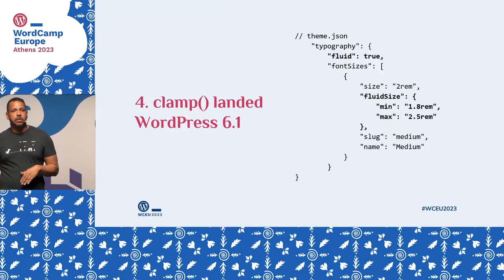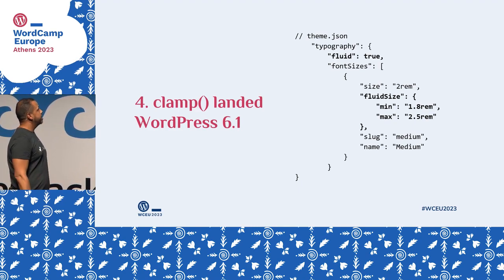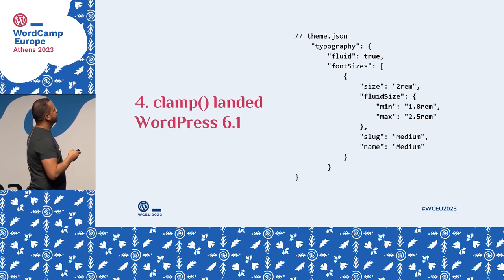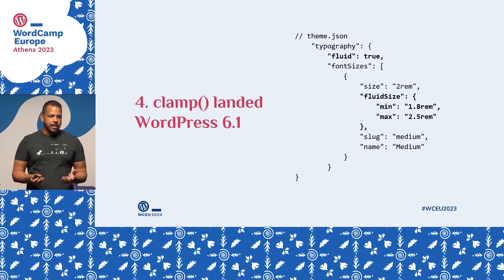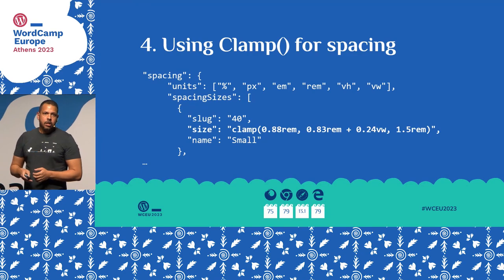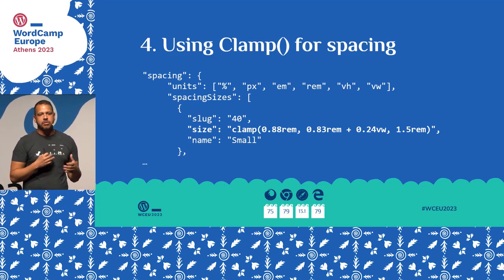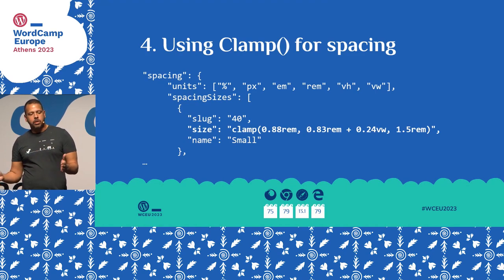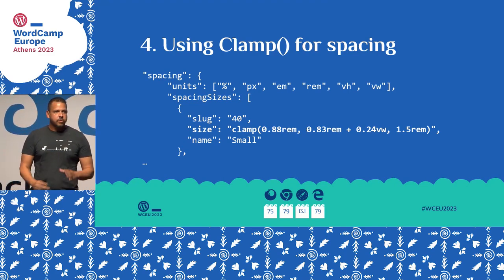The good news is that we have clamp on theme.json. How do you use it? In your theme.json file, in the typography settings, just set fluid to true. Then you can go to your font sizes — for example, a font medium — and set the min and max values, and you'll have fluid text in your block theme. You can also define spacing using clamp — so if you're on a mobile phone you have minimal spacing, and if you're on a big screen you have more space between elements, all using the power of theme.json.